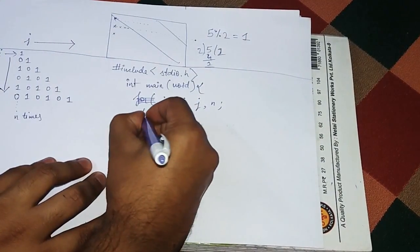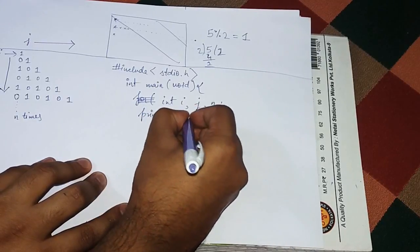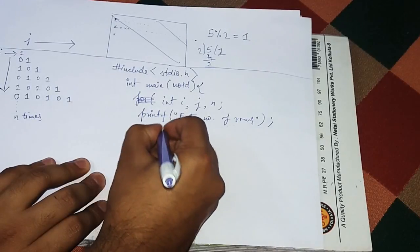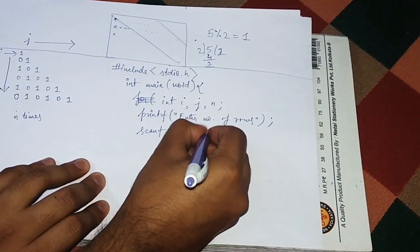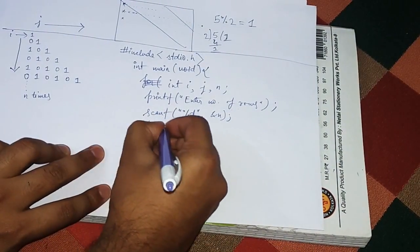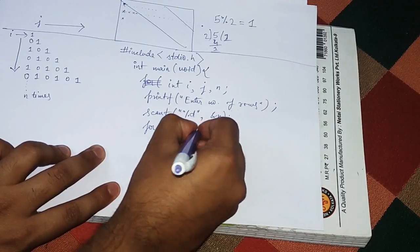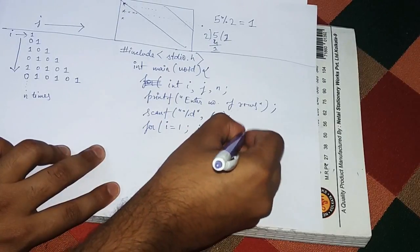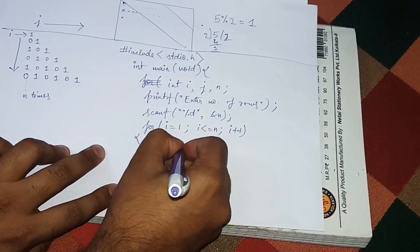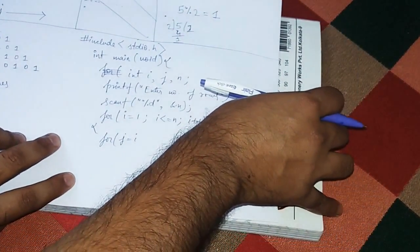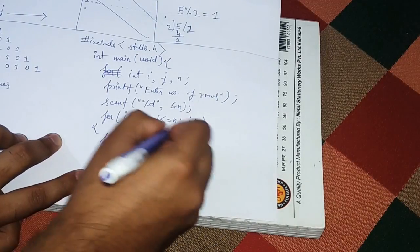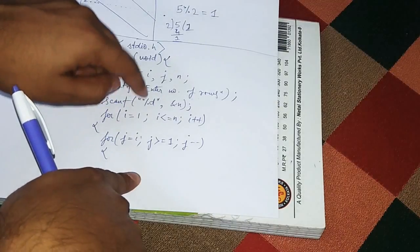We will ask the user to provide the input: how many rows they want to print. We write printf "Enter number of rows" and take that input, storing it in n. Now we start the i loop, which takes care of the number of rows, and then we start the j loop.